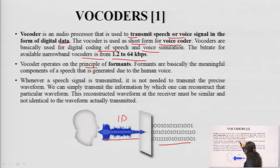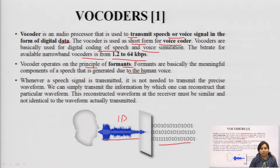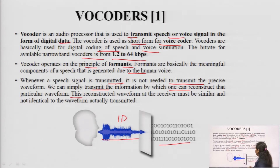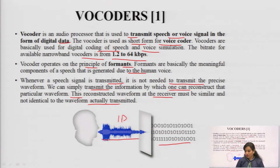Vocoder operates on the principle of formants. Formants are basically the meaningful components of a speech that is generated due to the human voice. Formants are the small segments we are going to process. Since the voice signal is a continuous time signal and continuously varying, we have to consider a very short duration signal and treat it as a stationary signal, then calculate some parameters corresponding to that particular signal. Whenever a speech signal is transmitted, it is not needed to transmit the precise waveform — we can simply transmit the information by which one can reconstruct that particular waveform. The reconstructed waveform at the receiver must be similar, but not identical, to the waveform actually transmitted. That is the concept of vocoder.